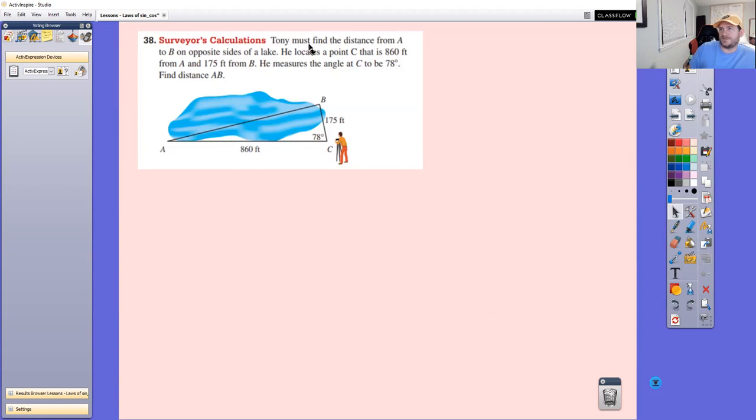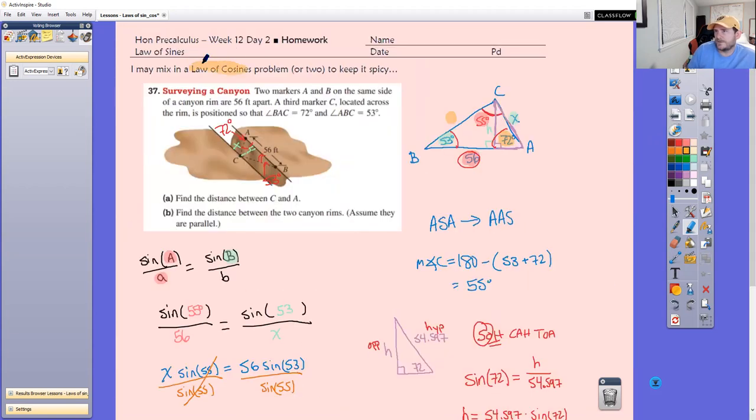This one says, surveyors calculations. It says Tony must find the distance from point A to B. So he's trying to find the distance across this lake. So if he has no boat, that's going to be hard for him. He locates point C that is 860 feet from A and 175 feet from B. And he measures the angle at C to be 78. So find the distance AB. Okay, cool. So looking at this problem, I've only got one angle, so I can't solve for any other angles. And that's problematic because I've got the angle, but I don't have the side. And then I've got a side, but I don't have an angle. And then I've got a side, but I don't have an angle. So the fact that we have no known pair of angle to side tells me that this is the problem that I slipped in. That is not a law of sines problem. This is your law of cosines problem.